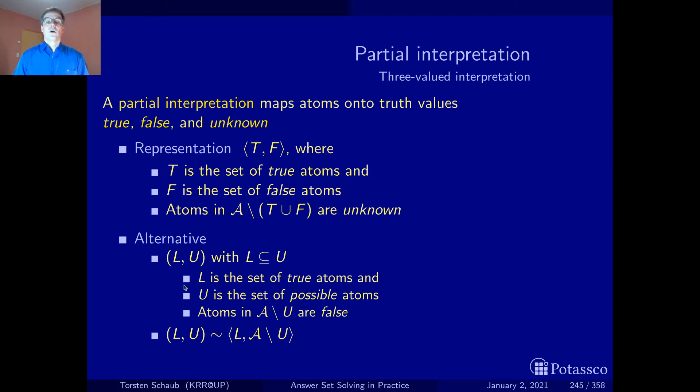This is how we looked at things when we derived a first algorithm for stable model computations from first principles and when we talked about grounding we used this representation. The relationship between both representations is pretty obvious. In both cases the true atoms are represented explicitly while here we represent the possible ones and there we represent the false ones.